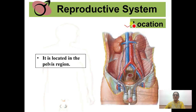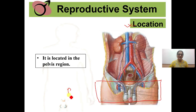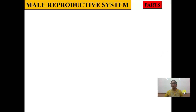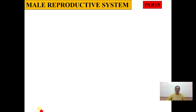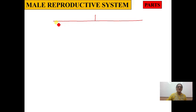First, we will know about the location of the male reproductive system. The male reproductive system is found in the lowermost part of the abdomen, called the pelvic region, because the pelvic girdle is found here. The male reproductive system is basically made up of two parts: reproductive organs and reproductive glands.